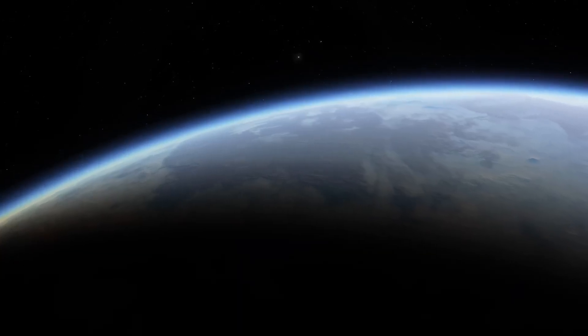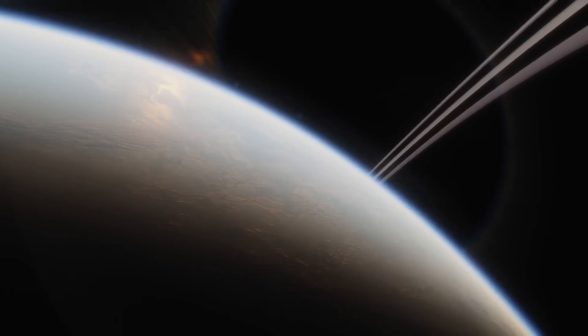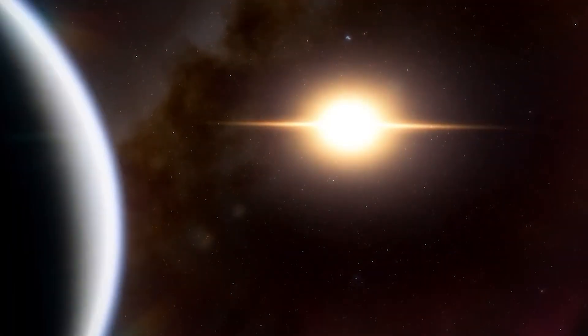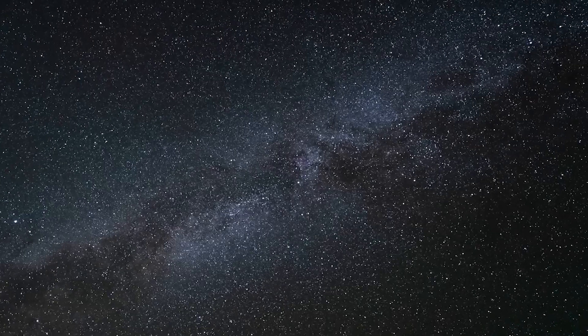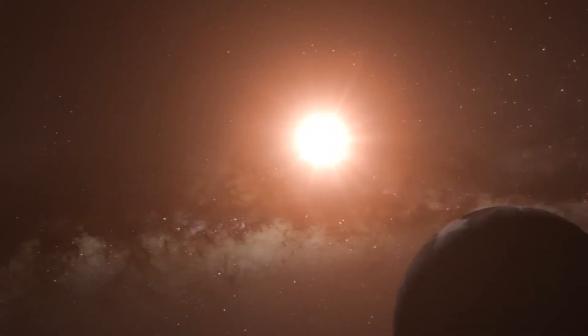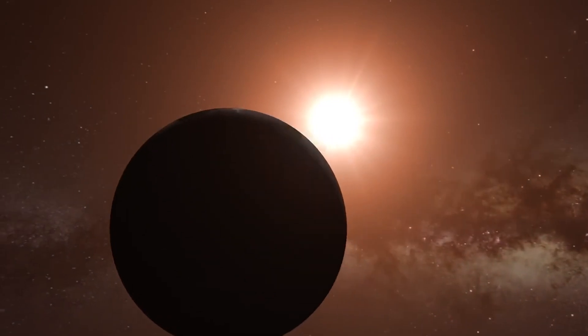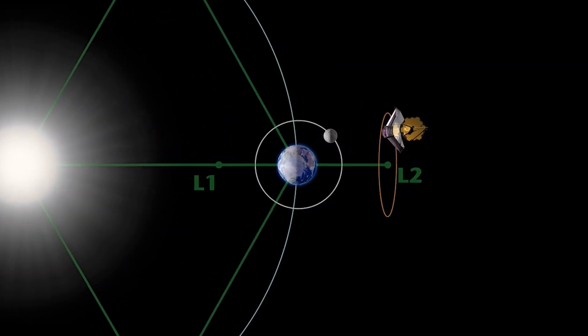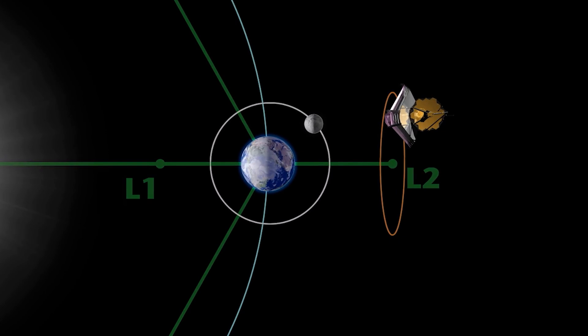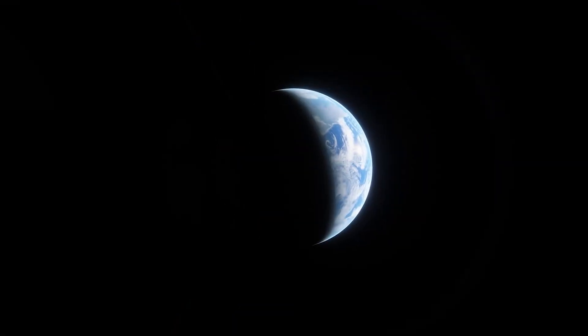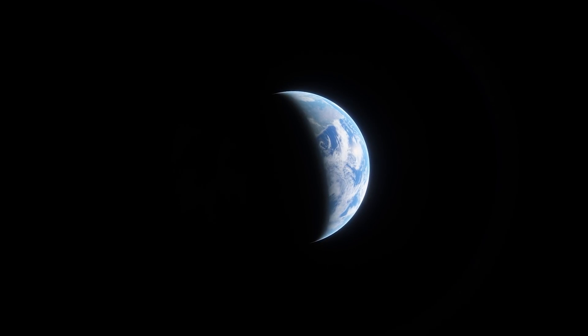The temperature variation on Proxima b, as determined by its atmospheric composition, is an intriguing topic for astronomers, and the JWST can effectively probe the planet's thermal emissions to provide crucial data on its atmospheric properties. In addition, JWST's orbit around the Earth aligns with the orbit of Proxima b, allowing full observations of its diurnal and nocturnal cycles in 11.2 Earth days.